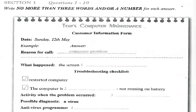You will hear a number of different recordings and you will have to answer questions on what you hear. There will be time for you to read the instructions and questions, and you will have a chance to check your work. All the recordings will be played once only. The test is in four sections. At the end of the test, you will be given 10 minutes to transfer your answers to an answer sheet. Now turn to section one. You will hear a conversation between a computer technician and a woman whose computer has crashed. First, you have some time to look at questions one to four.